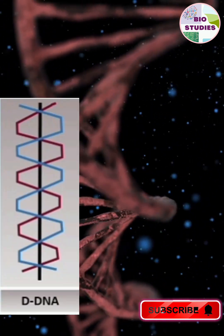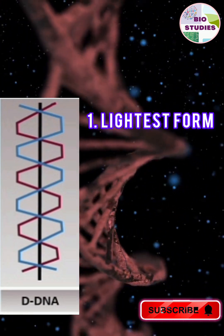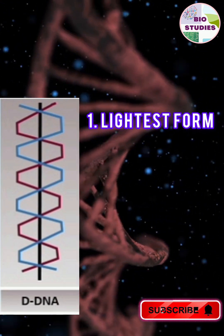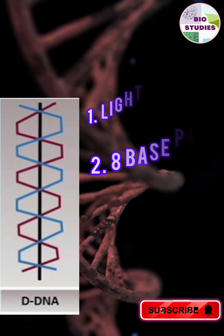Next is D-DNA. It is the lightest form and there are 8 base pairs present per turn.